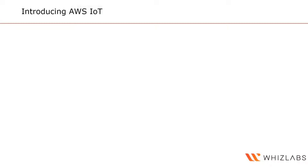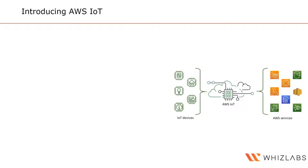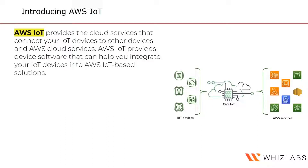AWS IoT provides the cloud services that connect your IoT devices to other devices and to AWS cloud services. It also provides device software that can help you integrate these IoT devices into AWS IoT-based solutions. For example, you might have a smart bulb at home, and AWS IoT provides the infrastructure to relay its conditions, control it via an application, and store data in Amazon S3, DynamoDB, or send alarms to CloudWatch.